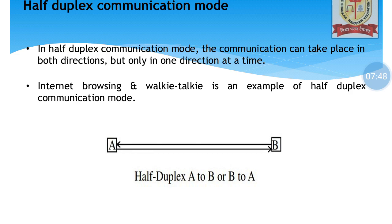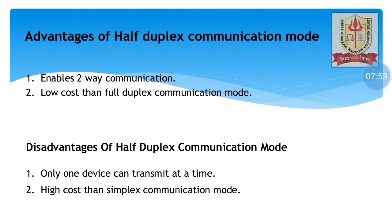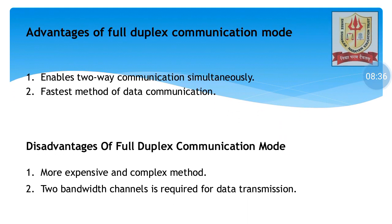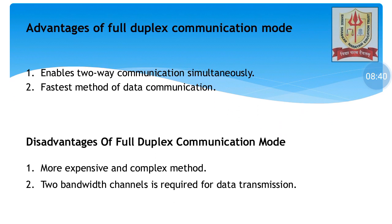Regarding advantages of half-duplex, it enables two-way communication and is of low cost compared to full-duplex. The disadvantage is only one device can transmit at a time, not simultaneously. Regarding full-duplex communication mode, whatever disadvantages existed in simplex and half-duplex are rectified here. Both directions can communicate with each other simultaneously. A telephone is an example — we can talk with each other simultaneously, and in a conference call, four to five people can talk simultaneously. Advantages: enables two-way communication, fastest mode of data communication. Disadvantages: it is expensive and complex, and two bandwidth channels are required for data transmission.